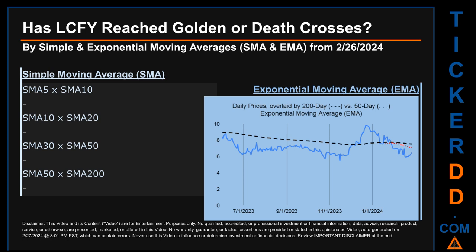We could not find either a golden cross or death cross signal for the 5-to-10, the 10-to-20, the 30-to-50, or the 50-to-200 day ranges.